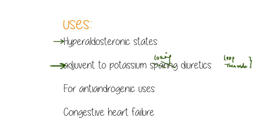Another condition is hyperaldosteronic states: when the level of aldosterone rises in the body, it may lead to unwanted effects, so we can give spironolactone and eplerenone to block the action of aldosterone. They are also used in congestive heart failure, a condition where the heart fails to pump blood adequately, causing fluid retention. In congestive heart failure, increased levels of aldosterone are almost always associated and have very unwanted and notorious effects on the heart.